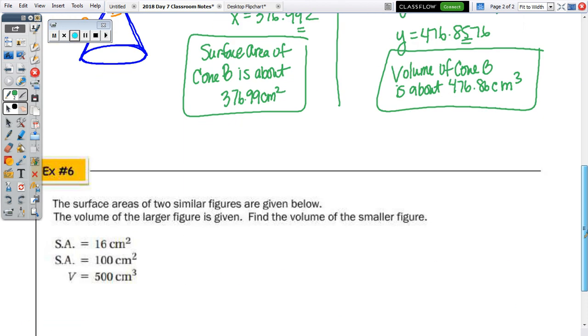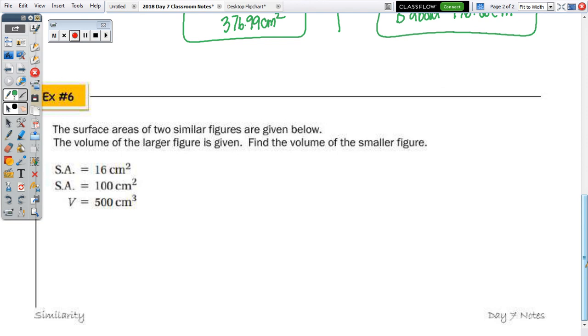And the last one. The surface areas of two similar figures are given below. The volume of the larger figure is given. Find the volume of the smaller figure. So, again, we don't know the figure, but I'll use A and B for their ratio. And given the surface areas, we know that when we square the ratio, we get 16 over 100. And those two numbers are perfect squares. Take the square root. We get A over B equals plus and minus. Reject the negative of 4 tenths.